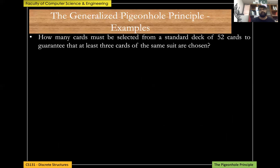Let's take another example: how many cards must be selected from a standard deck of 52 cards to guarantee that at least three cards of the same suit are chosen? There are four suits: hearts, spades, clubs, and diamonds. The worst case is selecting two of each suit — that's 2×4 = 8 cards — where it's still possible to have exactly two of each suit.